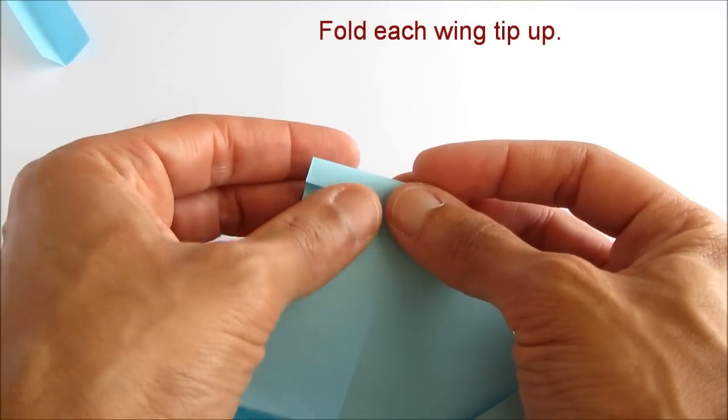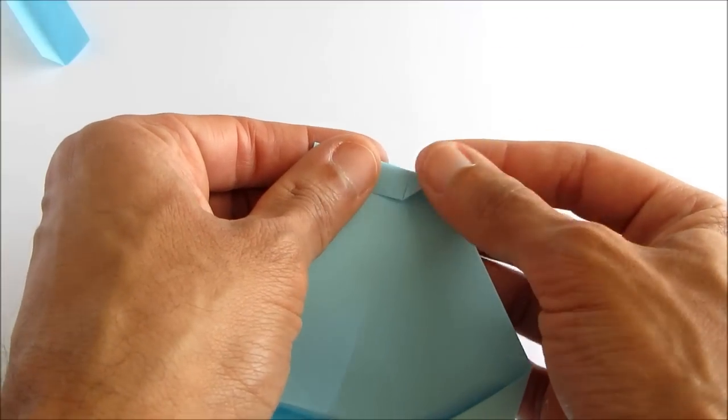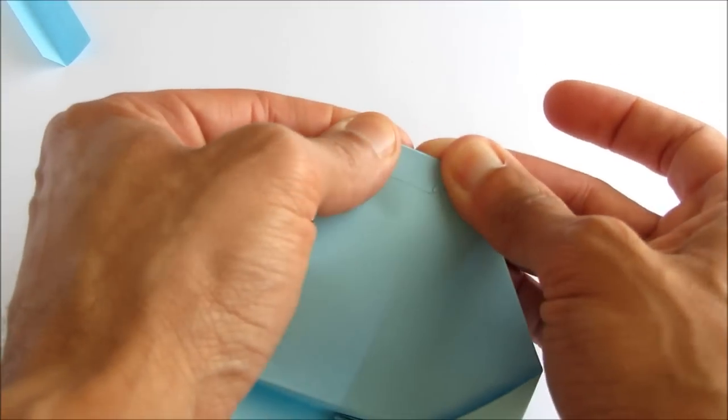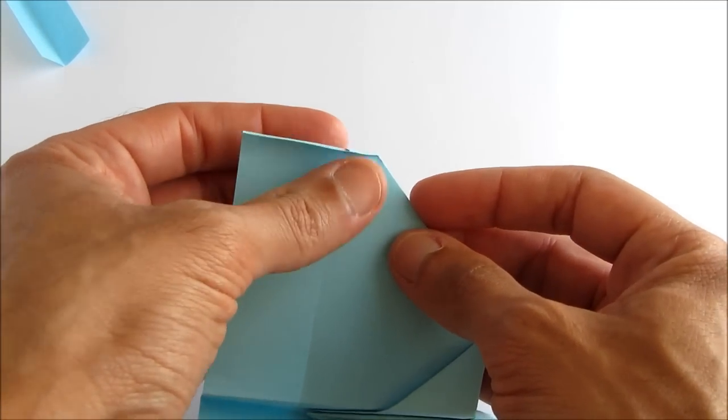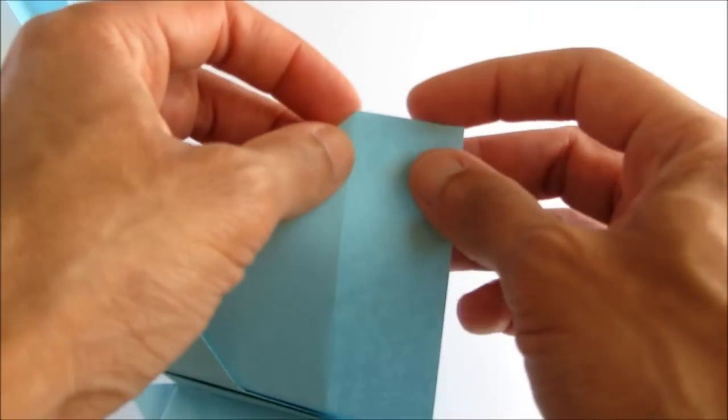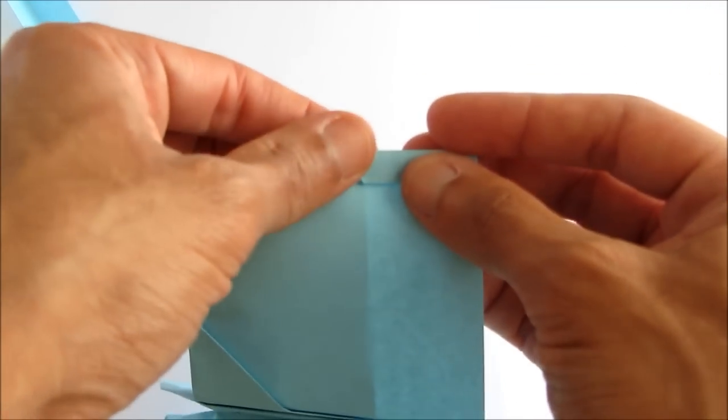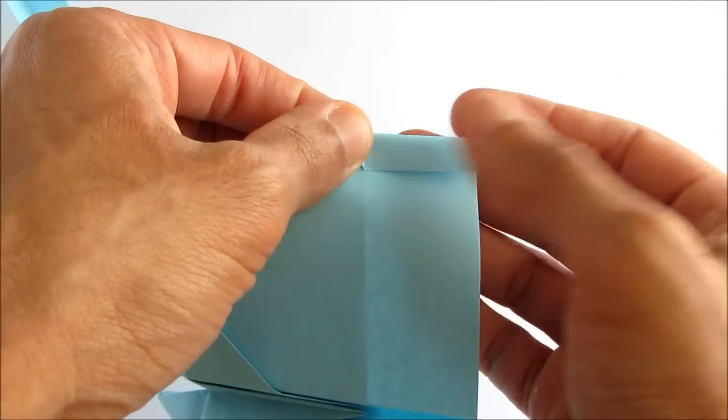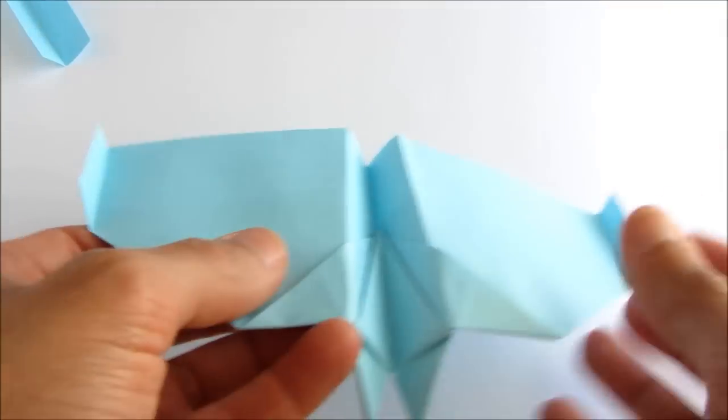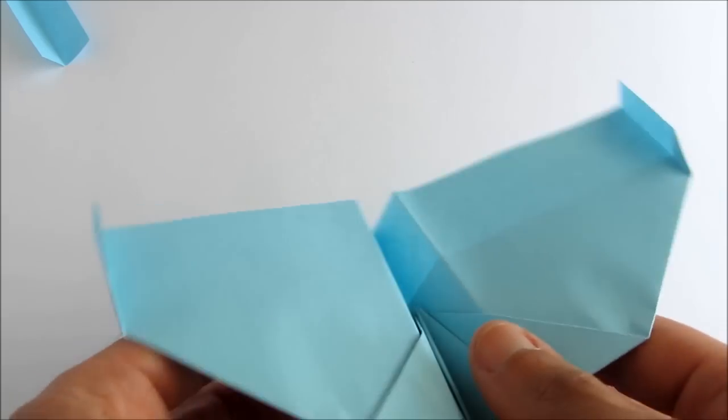Now you're going to fold each of the wing tips upwards. Maybe three to five millimeters for the wing tip. And this helps stabilize the flight of the airplane as well. So make sure you do that for both tips. And each tip should be at about the same angle to the wing.